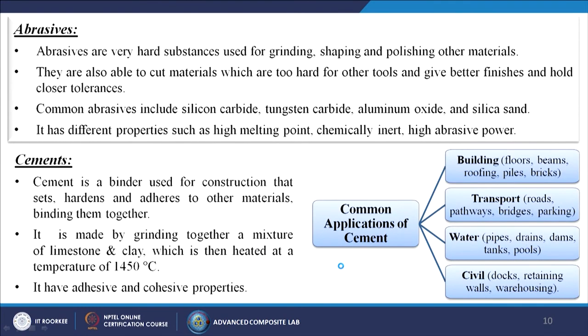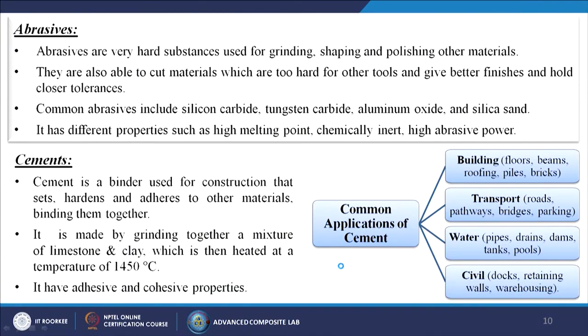Abrasives are very hard substances used for grinding, shaping, or polishing other materials — used in emery paper, polishing, lapping, and honing methods. They can cut materials too hard for other tools and give better finishes and closer tolerances. Common abrasives include silicon carbide, tungsten carbide, aluminium oxide, and silica sand. Properties include high melting point, chemical inertness, and high abrasive power.